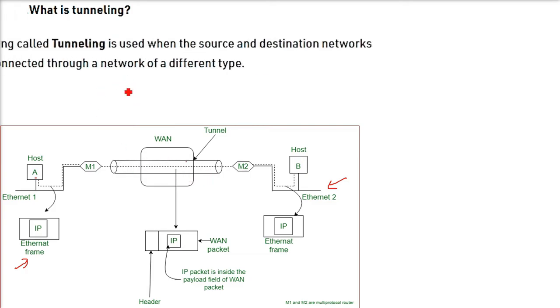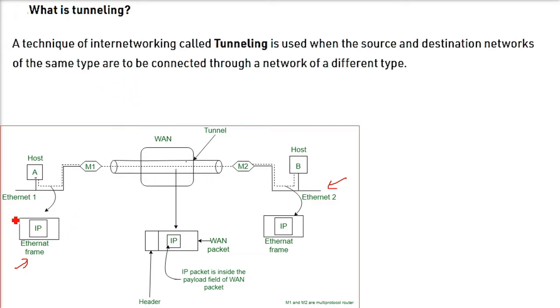The technique of internetworking called tunneling is used when the source and destination networks of the same type are to be connected through a network of a different type.